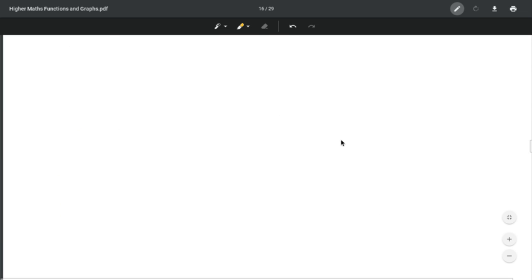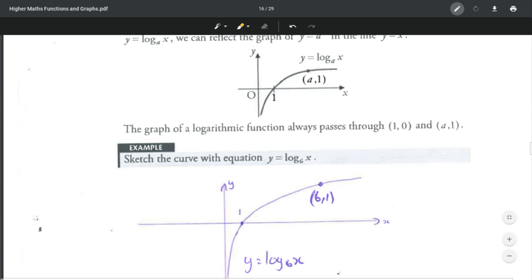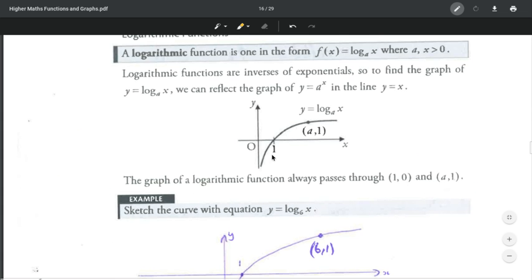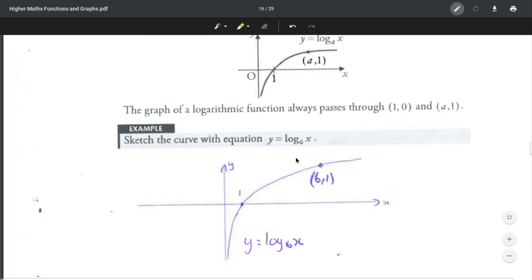In general, log base a of x goes through the points (1,0) and (a,1). For example, y equals log base 6 of x goes through (1,0) and (6,1). It takes this form, which is the reflection of y equals 6 to the power x in the line y equals x.